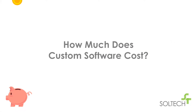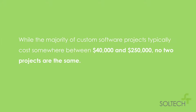How much does custom software cost? That's a great question, and it's a tough question to answer, because it depends. While no two software projects are the same, in our experience, the majority of custom software projects fall somewhere between $40,000 and $250,000 to design and develop.